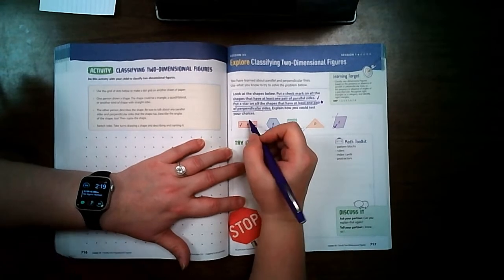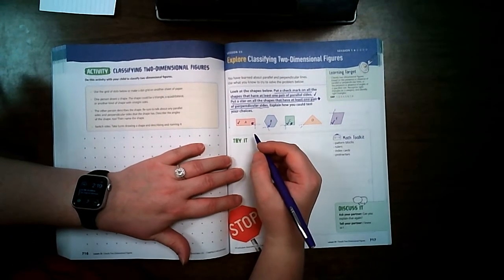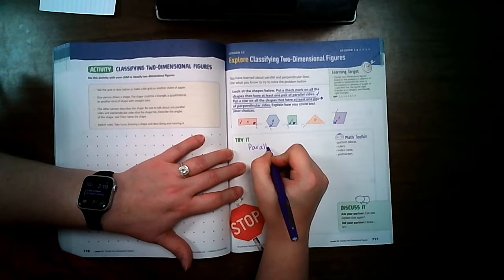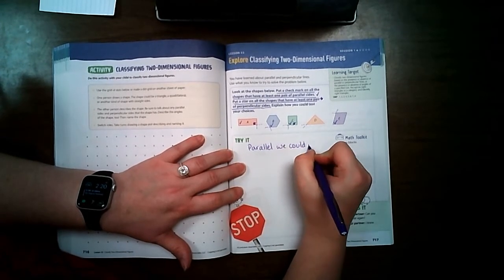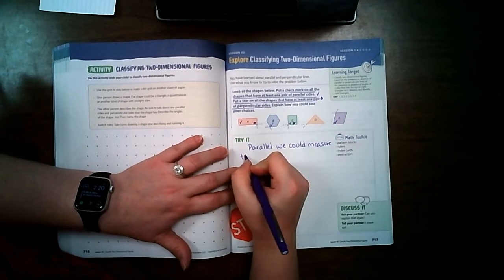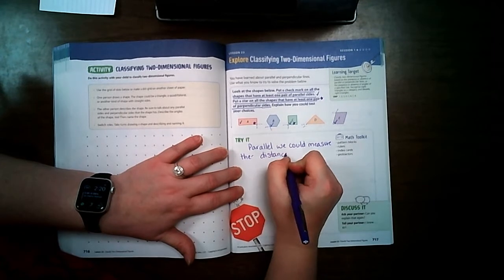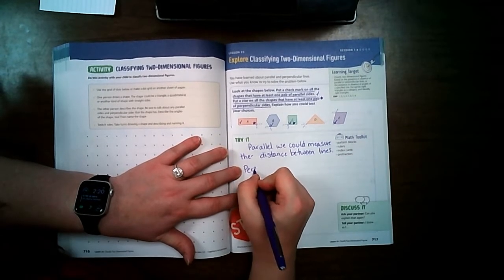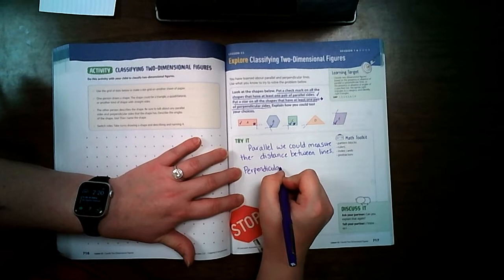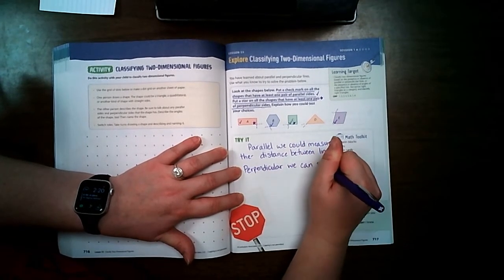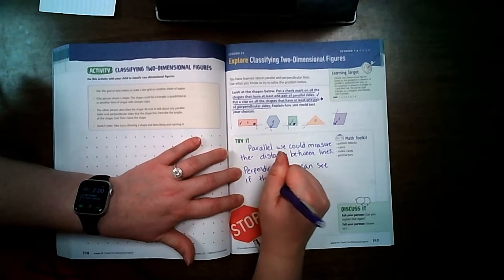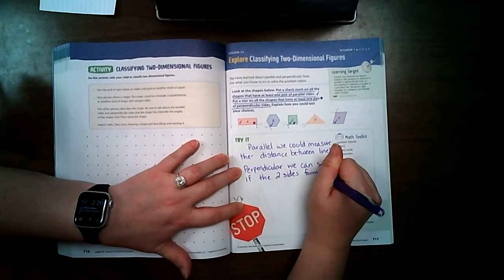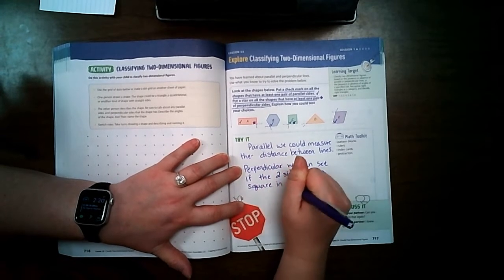Explain how you could test your choices. So we could test by, for parallel, we could measure the distance between lines. And for perpendicular, we can see if the two sides form a square in the corners.